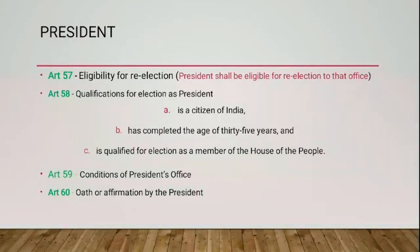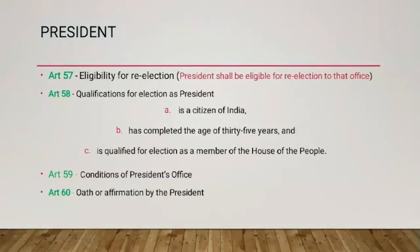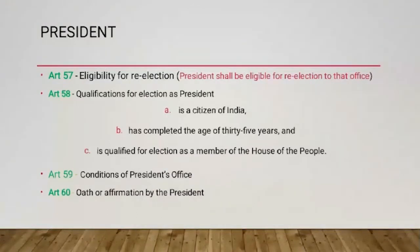A person shall not be eligible for election as President if he holds any office of profit under the Government of India or government of any state or under any local or other authority subject to the control of any of the said governments. Article 59 states that the President shall not be a member of either House of Parliament or a House of Legislature of any state. If a member of either House is elected President, he shall be deemed to have vacated his seat on the date on which he enters upon his office as President.